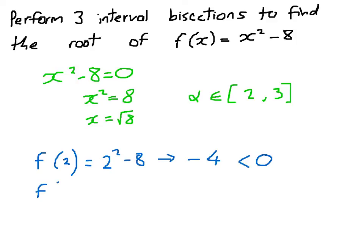If I substitute 3 into my function, I have 3² - 8. Well that's 9 - 8, that's +1. And that is bigger than 0. And it's this change of sign, the fact that one is less than 0 and one is bigger than 0, that tells me that the solution that gives me 0 must be on that interval.